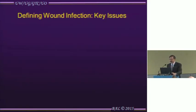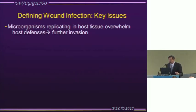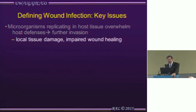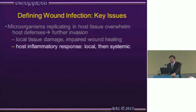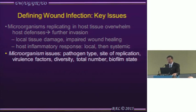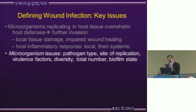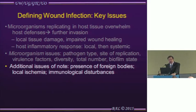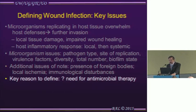Some key issues you need to understand about defining wound infection: microorganisms replicate in host tissue, overwhelming host defenses, causing local tissue damage and impairing wound healing. There's also a local host inflammatory response which may become systemic — the systemic inflammatory response syndrome. Special considerations include the type of pathogen, site of replication, virulence factors, diversity of organisms, total number of organisms, and whether they're in a biofilm state. Other factors include foreign bodies, local ischemia, and immunological disturbances. The key reason to define wound infection is that you do not need antimicrobial therapy if it's not present, and you do if it is.